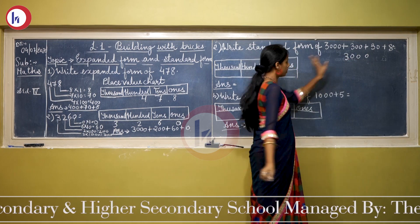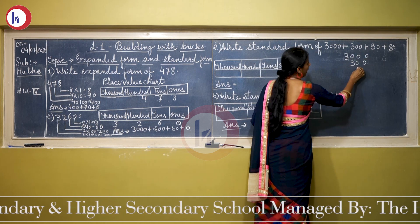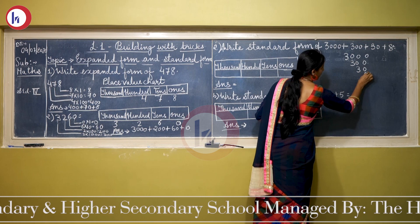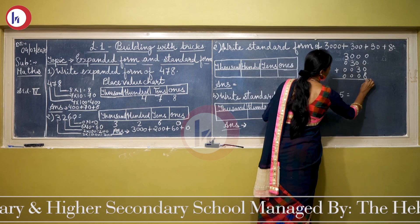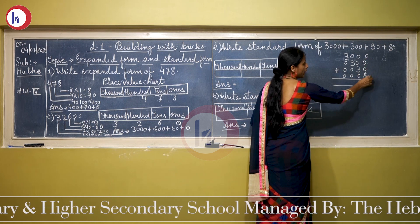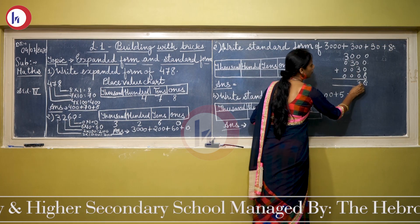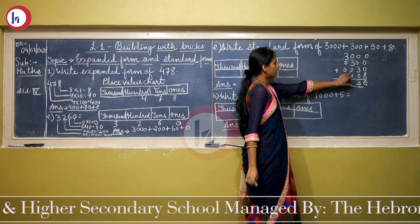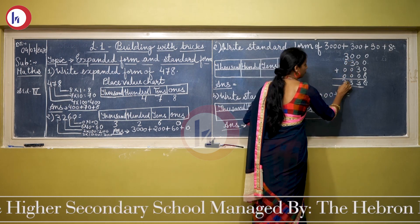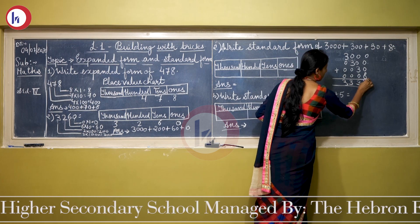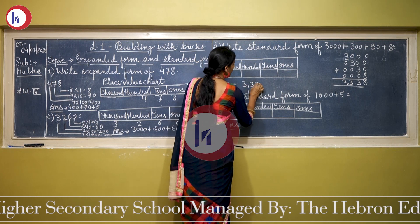Using the addition method, we add 3000, plus 300, plus 30, plus 8. Starting from the ones column: 0 + 0 + 0 + 8 = 8. Then tens: 0 + 0 + 3 + 0 = 3. Then hundreds: 0 + 3 + 0 + 0 = 3. And thousands: 3 + 0 + 0 + 0 = 3. So the answer is 3338.